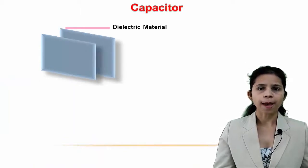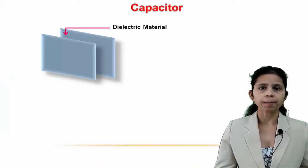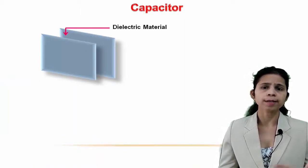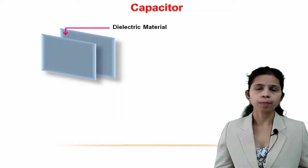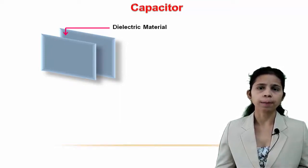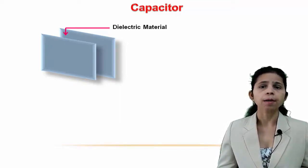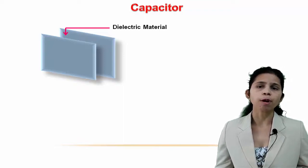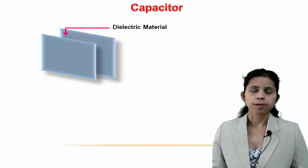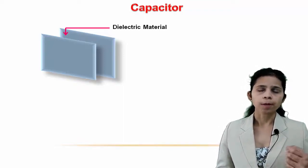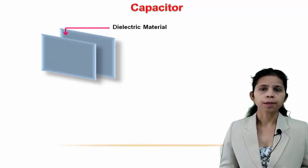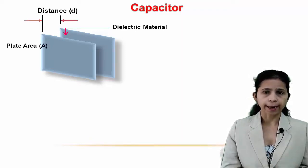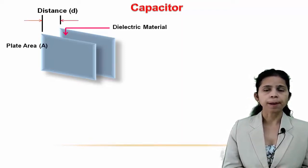Now let us discuss what is a capacitor. A capacitor consists of two parallel conducting plates separated by an insulating medium, which is called a dielectric. The dielectric could be air, paper, ceramic, mica, polyester, polystyrene, or polycarbonate plastic.